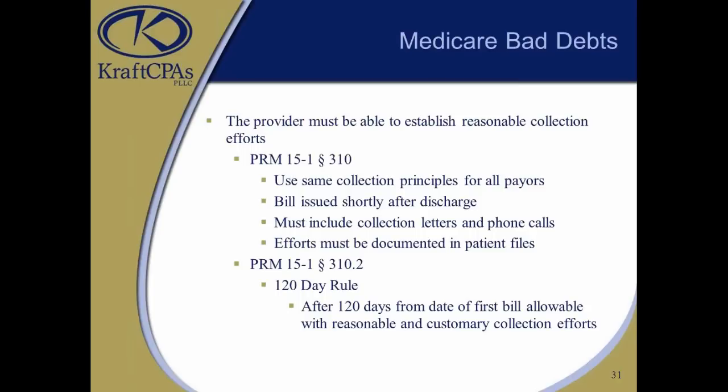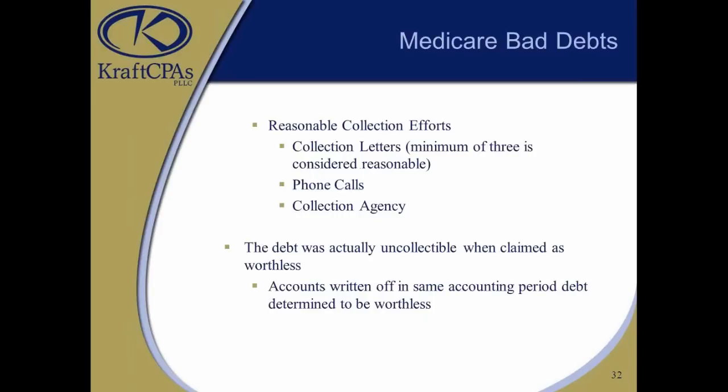The 120-day rule: you have to wait 120 days from the date of the first bill before it can be considered reasonable collection efforts. What are those collection efforts? Minimum of three letters, phone calls, and use of a collection agency. This must be documented in the patient file. I'd recommend going forward that you make sure your collection agency is actually keeping those notes — and consider bringing them on-site before you go through your bad debt audit two years after the fact. Make sure that's in your contract with the collection agency.